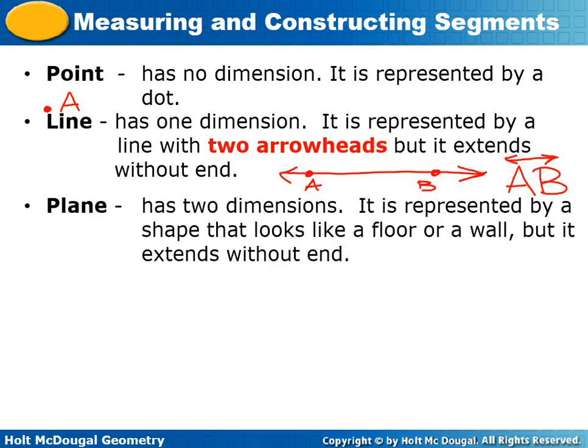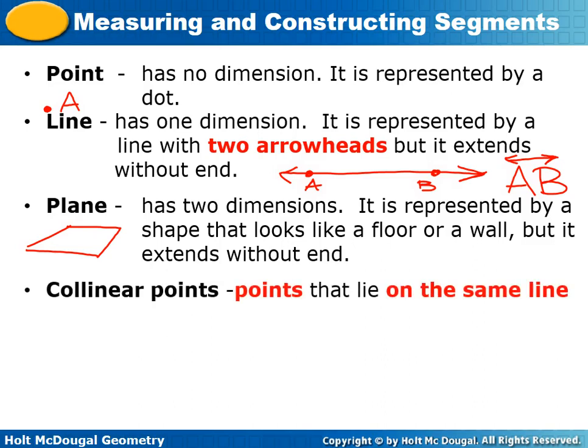Then we've got a plane. A plane is two-dimensional. It's represented by a shape that looks like a floor or a wall, but it extends without end — something that looks like a sheet of paper. Collinear points are points that lie on the same line. When we drew this line earlier, points A and B are collinear points because they are on the same line.